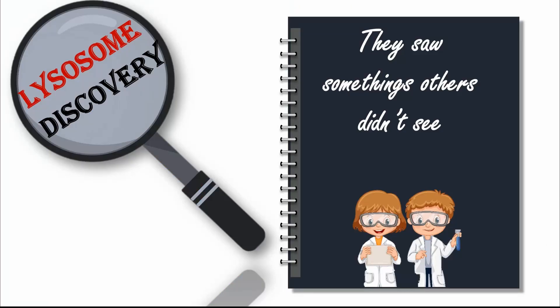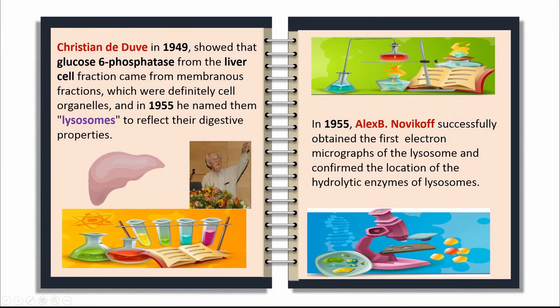They saw something others didn't see. Christian de Duve in 1949 showed that glucose-6-phosphatase from the liver cell fraction came from membranous fractions, which were definitely cell organelles. And in 1955, he named them lysosomes to reflect their digestive properties.